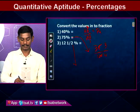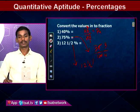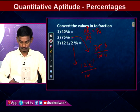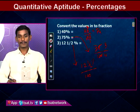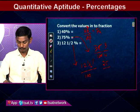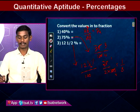Third: 12 and a half percent as a fraction. Divide by 100: (12½)/100. Convert the mixed fraction: (25/2)/100 = 25/200 = 1/8. So 12 and a half percent equals the fraction 1/8.